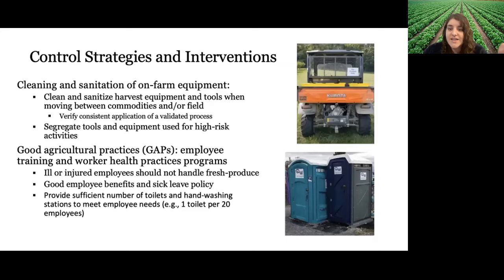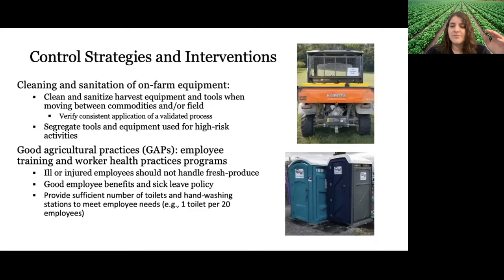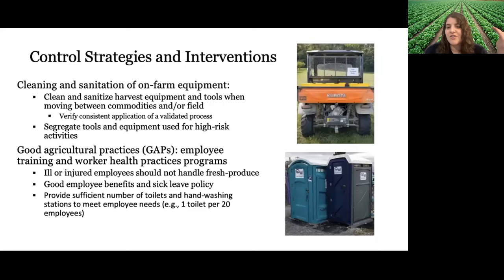There is specific guidance in GAPs outlining how many toilets should be available for a certain number of employees, and how far away they should be from fields. You don't want them too close, but you also don't want them too far away. A key reason: many workers are paid by the amount they harvest. If the bathroom is a 25-minute hike away, that's 50 minutes of produce harvesting they're not getting paid for, making them less likely to use toilet facilities when needed.